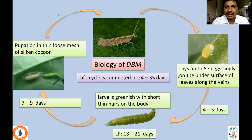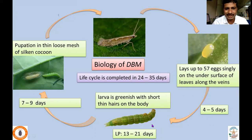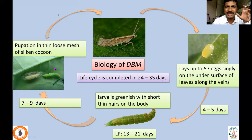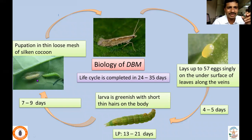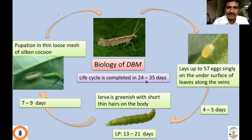Looking at the biology of Diamond Backmoth: it lays up to 57 eggs singly on the undersurface of leaves along the veins, preferring to lay eggs along the veins. It takes about four to five days for hatching. The larval period is about 13 to 21 days. The larva is greenish with short thin hairs arising on the body, measuring about a centimeter. The pupal period takes about seven to nine days. Egg to adult takes about 24 to 35 days.